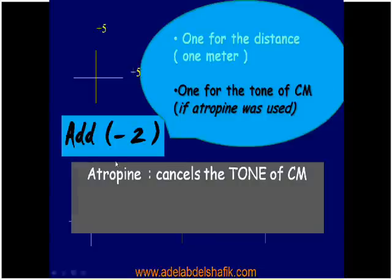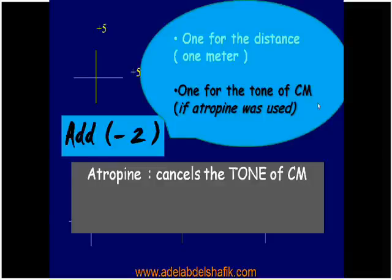The minus two added to retinoscopy results has two components: the first minus one is for the working distance of one meter. The second minus one is for the tone of the ciliary muscle when atropine was used. Atropine cancels the tone of the ciliary muscle during examination; later when the atropine effect is lost, this tone returns. We remove this effect by adding another minus one, because on average the tone of the ciliary muscle equals one diopter.